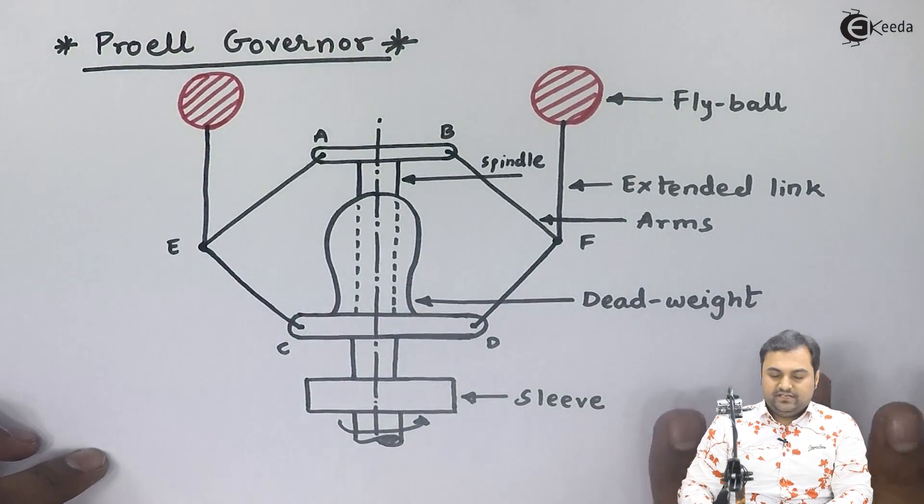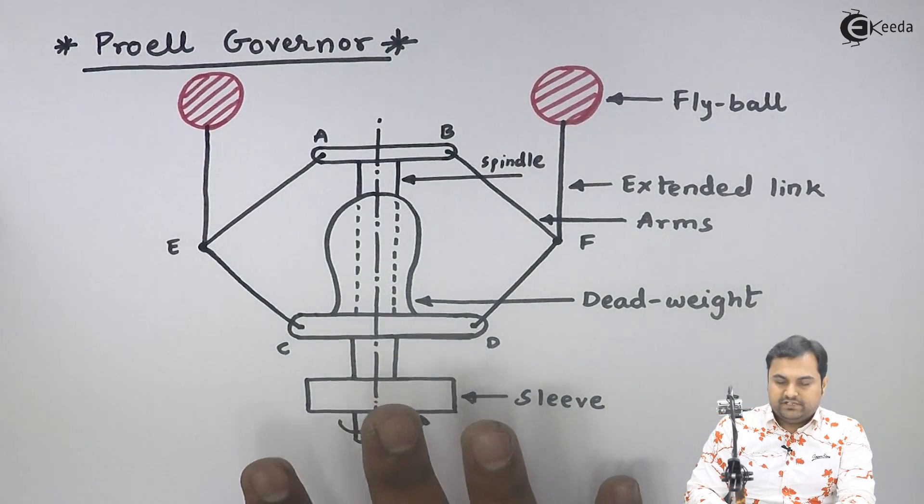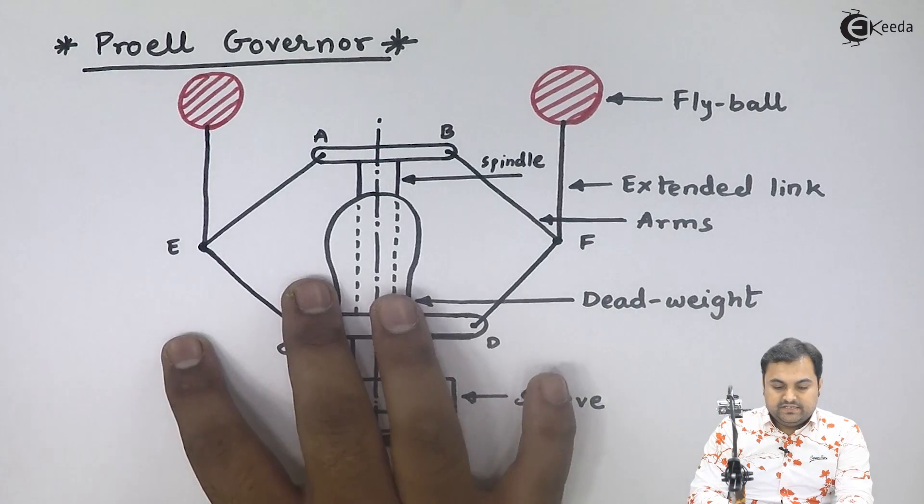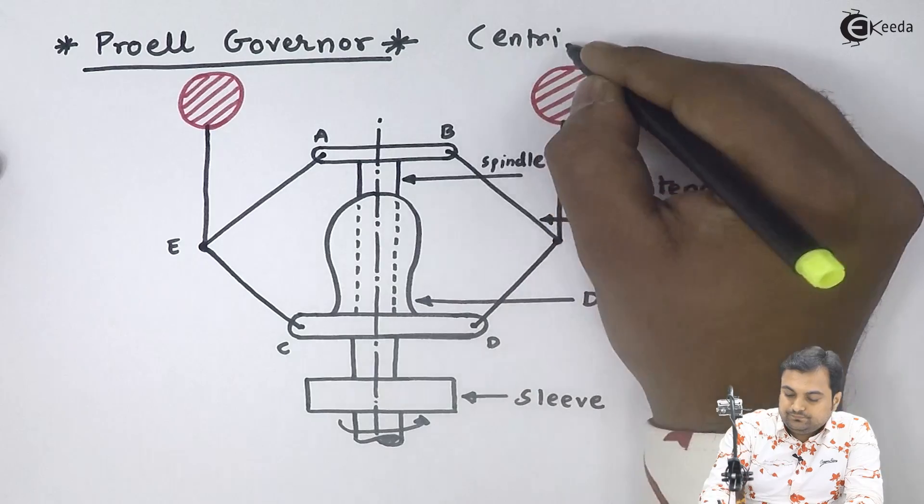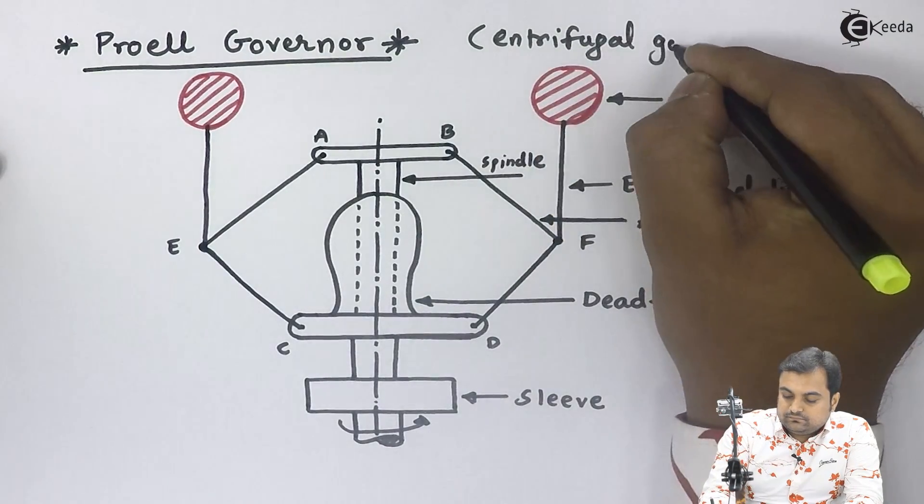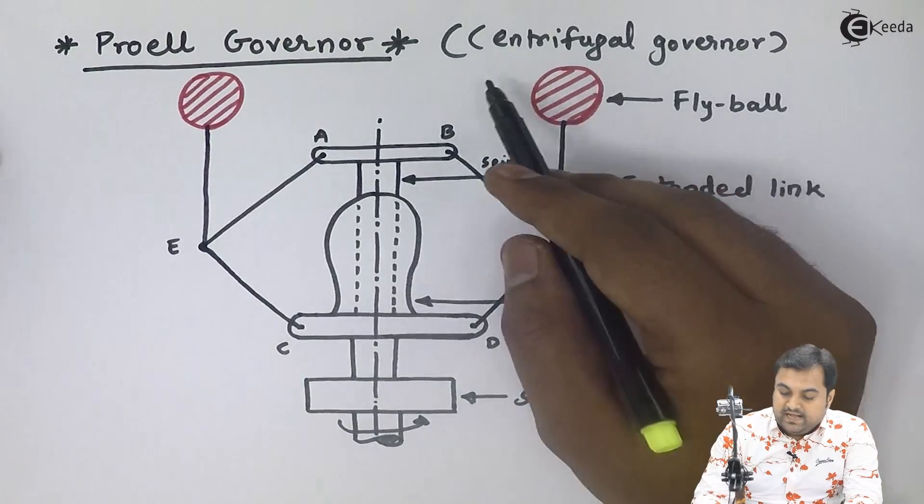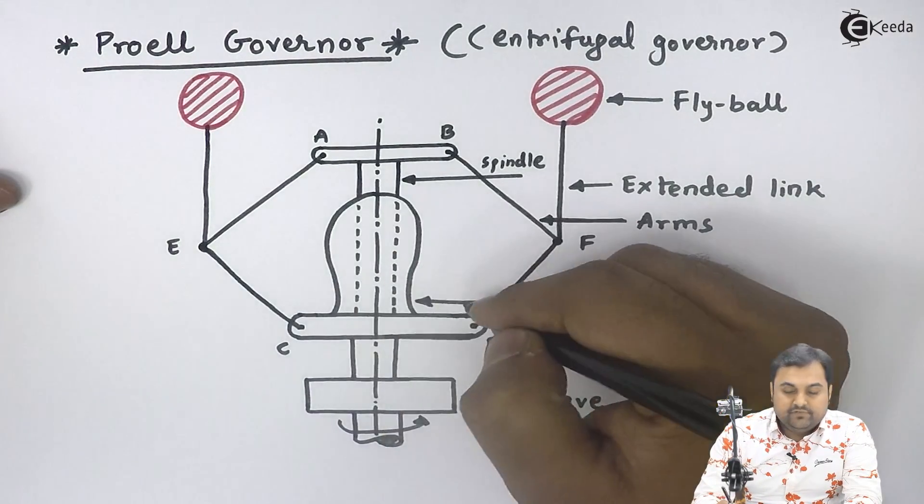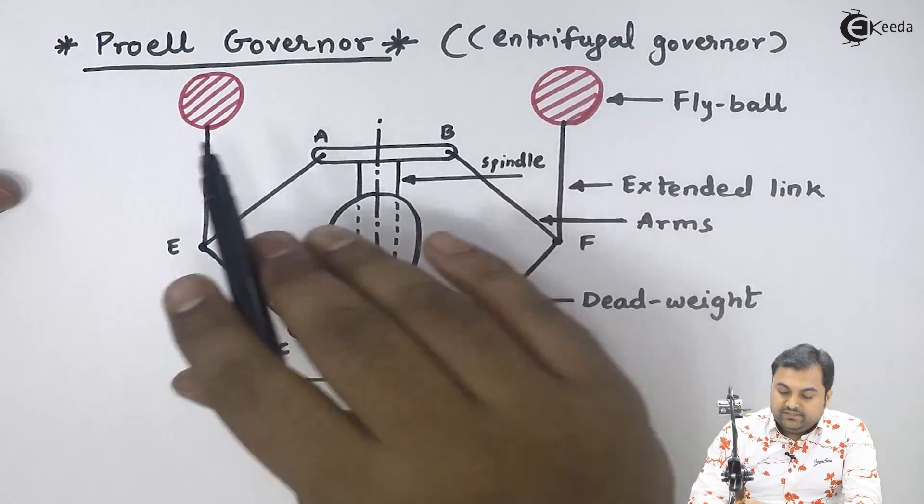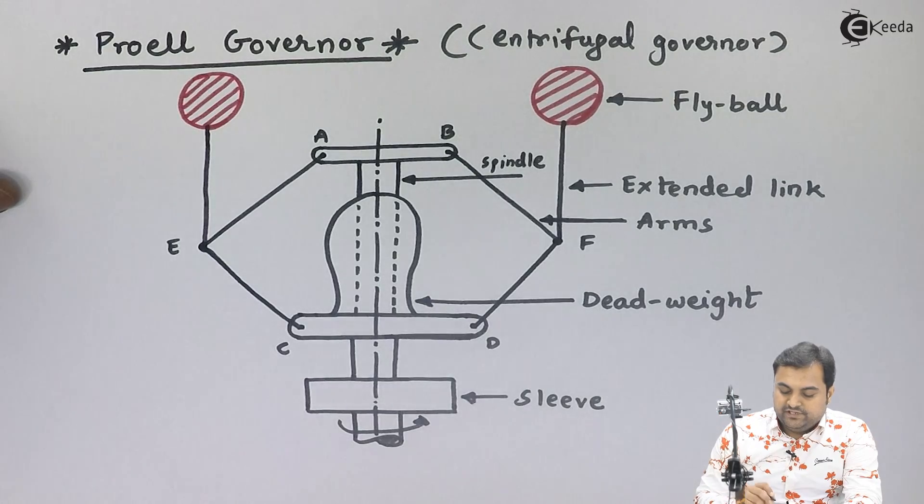Proell governor is a centrifugal governor. It is a loaded governor where we have dead weight and it works on the principle of centrifugal force. As the speed of the engine increases, centrifugal force tries to move these fly balls outwards.